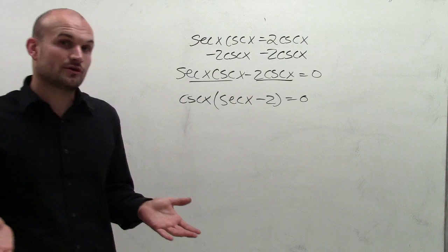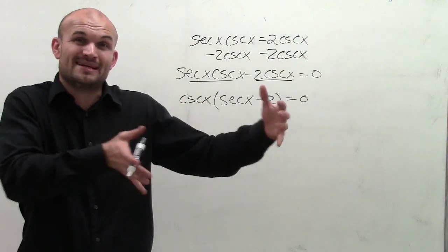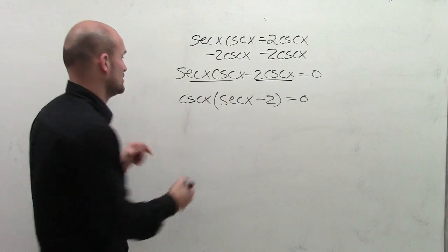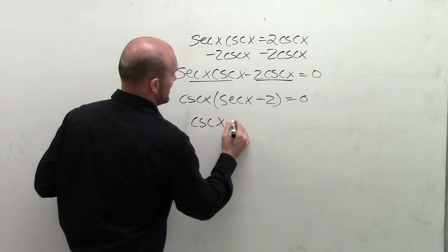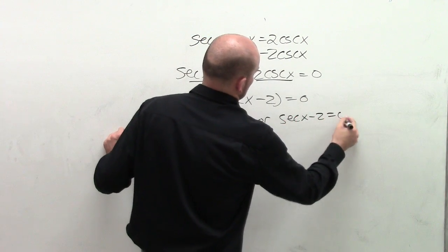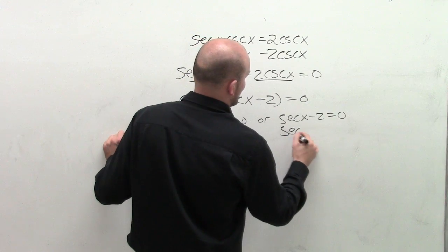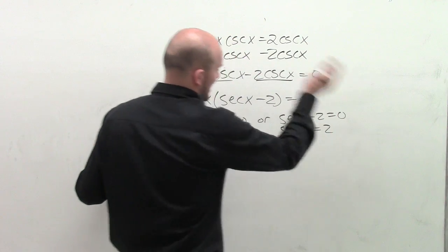Now, just like when we were solving by factoring, when you have one term times another term equals 0, one or both have to equal 0. So you can say cosecant of x equals 0, or secant of x minus 2 equals 0. Then, by solving for x, I get secant of x equals 2 when I add 2 to both sides.